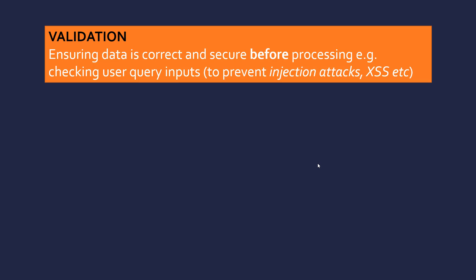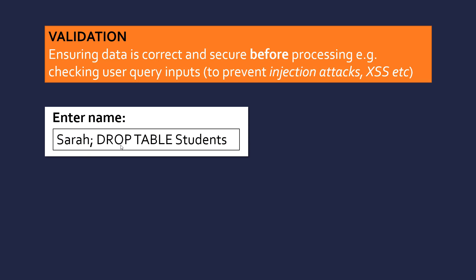The first key term is validation — ensuring data is correct and secure before processing it. You don't process data without checking it won't affect your system. The most common example is checking user query inputs on a website to prevent injection attacks. SQL injection is a very famous one: if there's no validation step, a user could type a query that interacts directly with your database — for example, deleting a table called students.